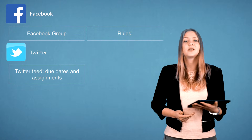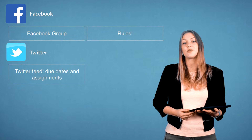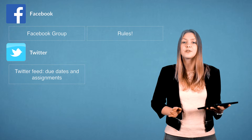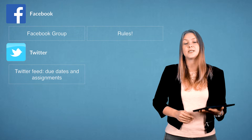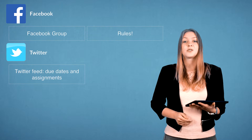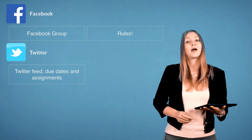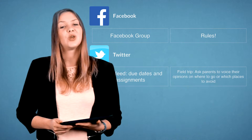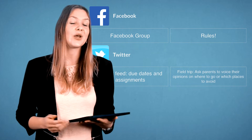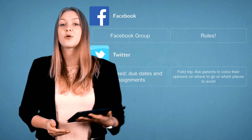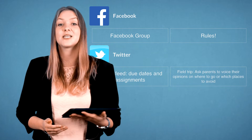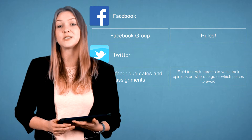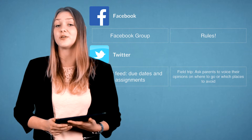Next up, Twitter. One of the simplest ways to use Twitter in the classroom involves setting up a feed dedicated exclusively to due dates, tests, or quizzes. As a result, students get a small reminder of upcoming due dates and assignments. You can also use Twitter for setting up a field trip — encourage parental involvement by asking them to voice their opinions on where to go and which places to vote for when planning field trips.